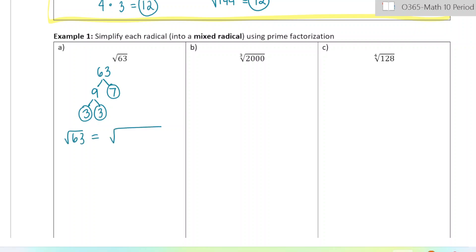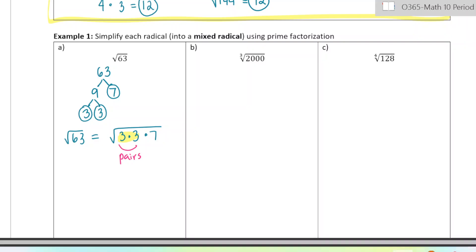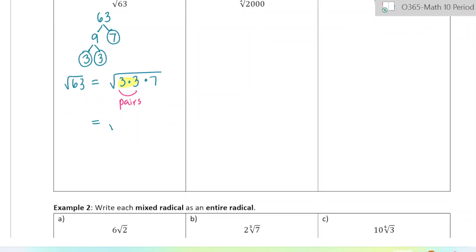You could write this as the square root of 3 times 3 times 7. Now since we're doing a square root, we want to look for any pairs of numbers — groups of 2 — because 3 times 3 is 9, which is a perfect square I can take the square root of and get a nice integer answer. So I separate out those 3s and leave the 7 behind. The square root of 9 is 3, and the square root of 7 is irrational, so we just leave it as 3 root 7.